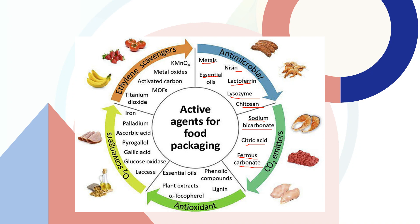Ethylene scavengers — for example, potassium permanganate — are used because ripened food products produce ethylene gas. When potassium permanganate comes in contact with the base, it oxidizes the ethylene and forms carbon dioxide and water vapor, rendering the potassium permanganate non-toxic. Other ethylene scavengers include activated carbons, metal oxides, and titanium oxides.